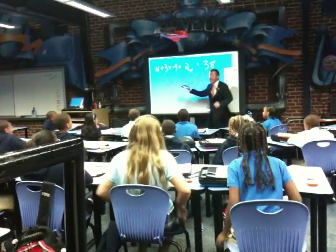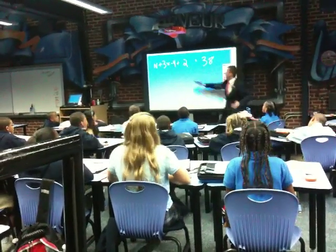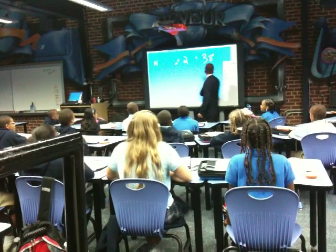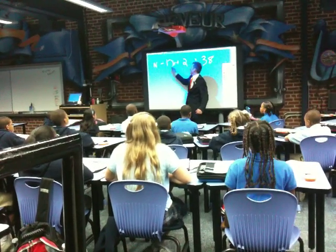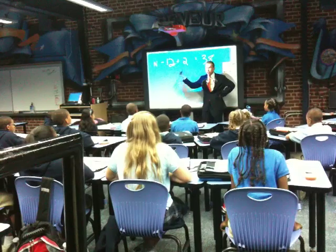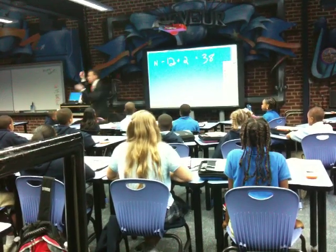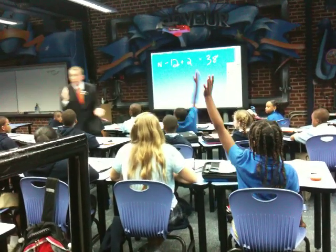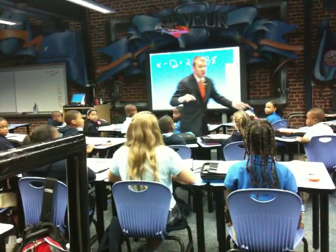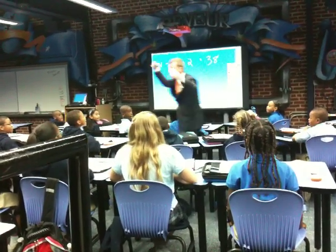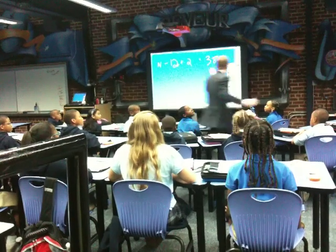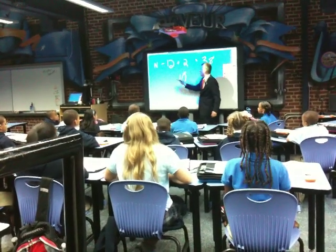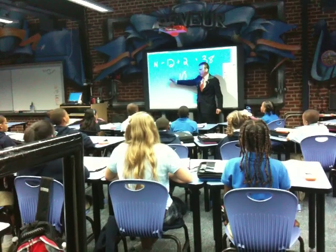What do you do when you have two integers and they're different signs? One's positive, one's negative. What do you do, Brandon? You find the difference. You find the difference and take the sign of the larger number! Awesome. What's the difference of 12 and 2? 10! And the sign of the larger number is going to be negative!